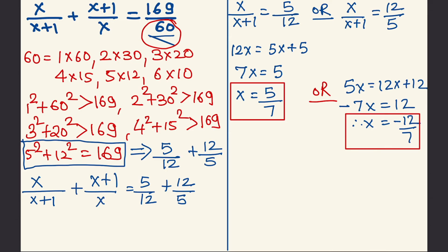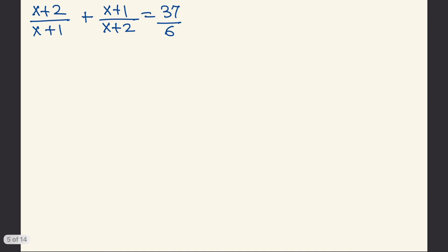Thus, a quadratic equation is an equation of degree 2 having 2 roots. One is x = 5/7 and the second is x = −12/7. Hope you got this tutorial — you can try this question yourself. Goodbye till the next tutorial; see you with more problems on quadratic equations.